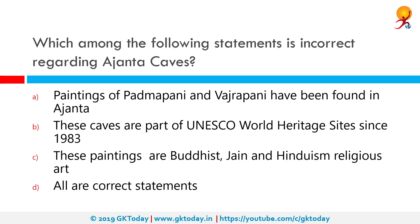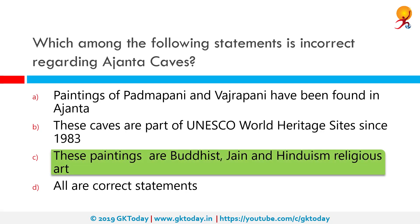Which among the following statements is incorrect regarding Ajanta caves? Among the given options, option C is incorrect. These paintings are not all Buddhist, Jain, and Hindu religious arts — the Ajanta caves only contain Buddhist paintings.